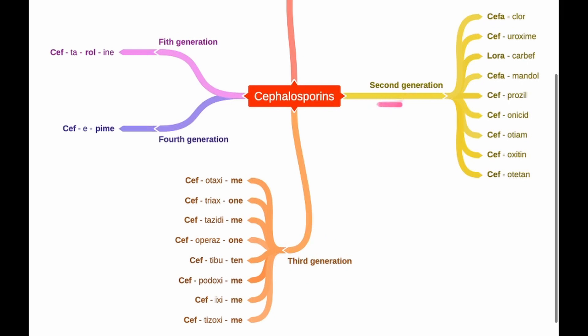Let's skip over the second generation, we do this at the end of the video. Now let's continue with the third generation. The third generation, remember for this generation in the beginning of the word 'cef' with no 'a' and the ending of the word with either '-me', '-one' or '-ten'. The memory hook for the middle part of the words are as follows.